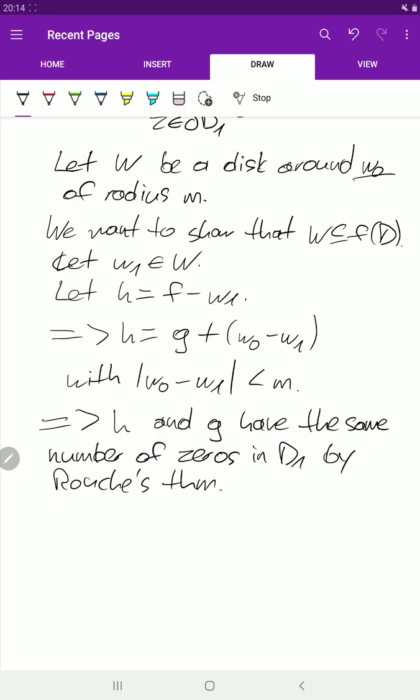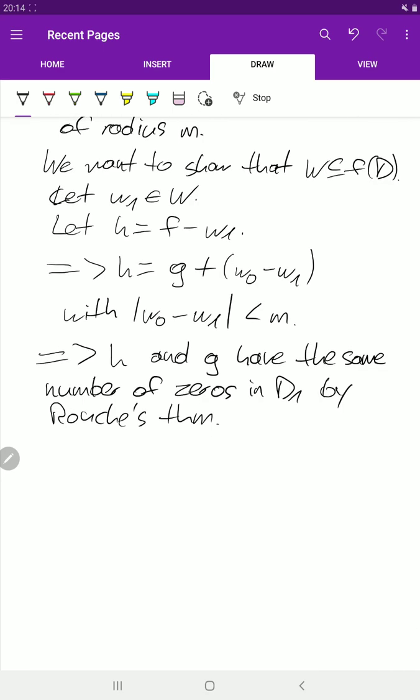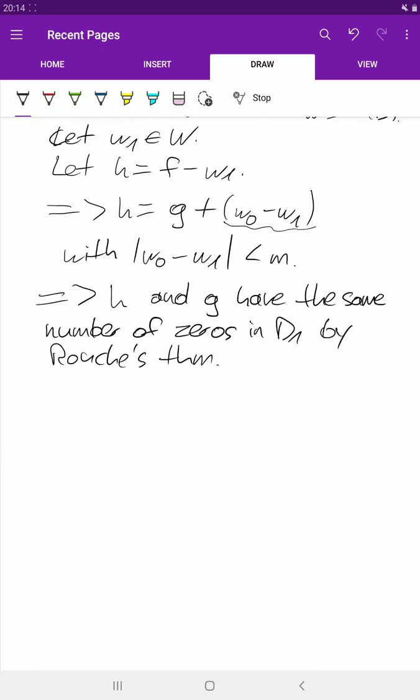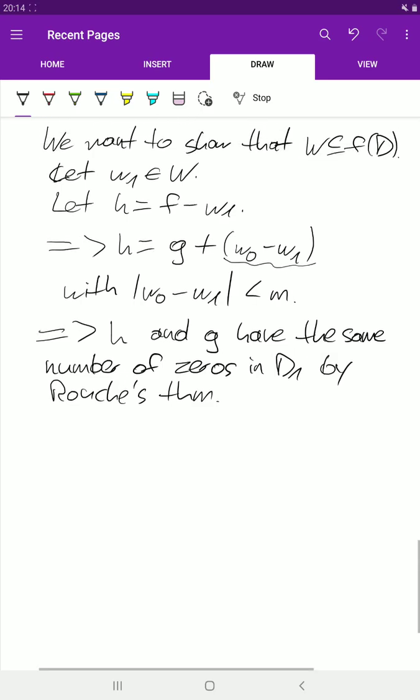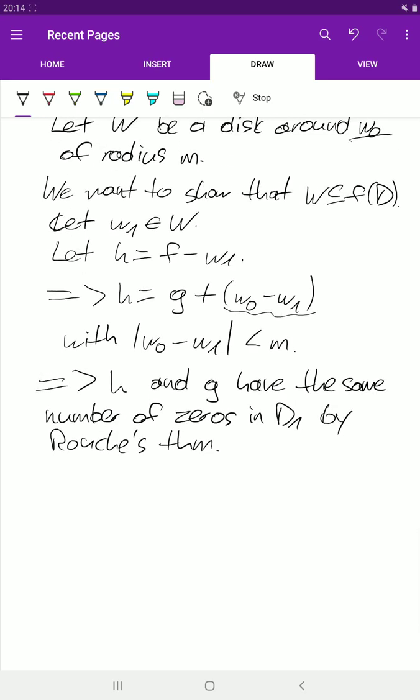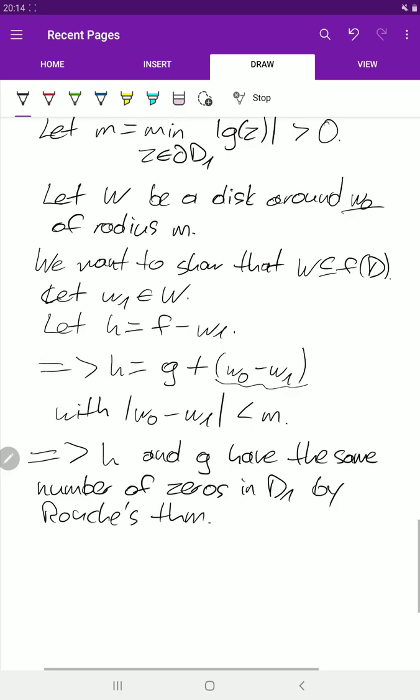Maybe let me mention that in Rouché's theorem we normally have two functions and this is the second function, which is just constant. They have the same number of zeros.